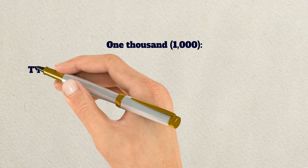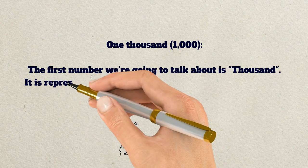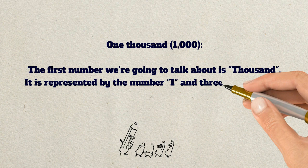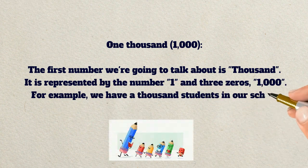One thousand. The first number we're going to talk about is thousand. It is represented by the number one and three zeros, 1,000. For example, we have a thousand students in our school.